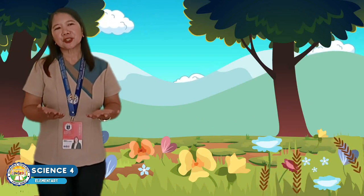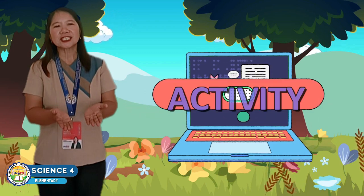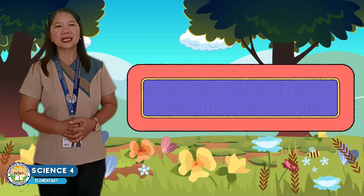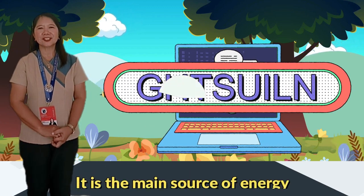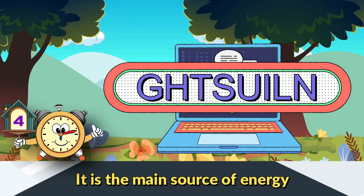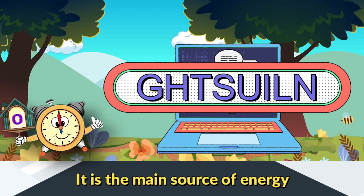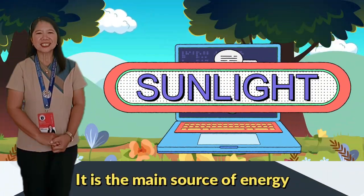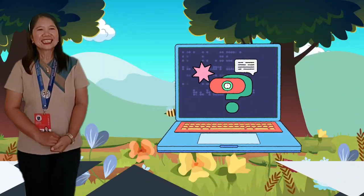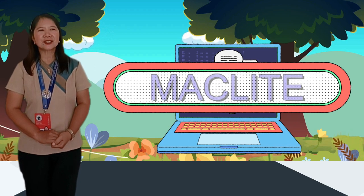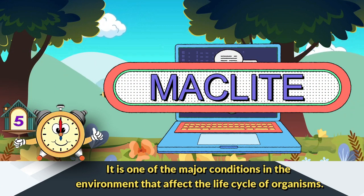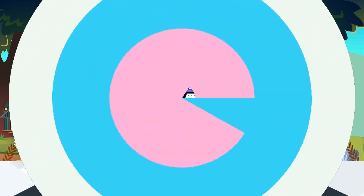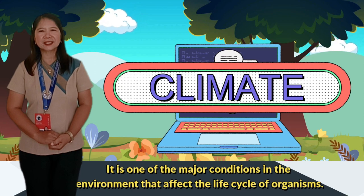Now, to further measure how much you have learned from this video lesson, do this activity. Arrange the jumbled letters to form the correct word. Number one — it is the main source of energy. If your answer is sunlight, correct! Number two — it is one of the major conditions in the environment that affects the life cycle of organisms. If your answer is climate, you got it!